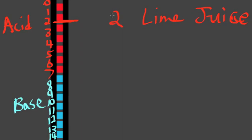Lime juice has a pH of 2. Another example would be something like ammonia, which is a household cleaner. Ammonia has a pH of 12, so it would fall right here on the pH scale. 12, ammonia.